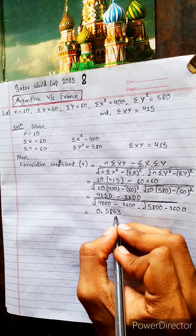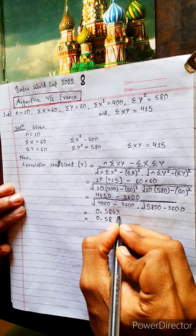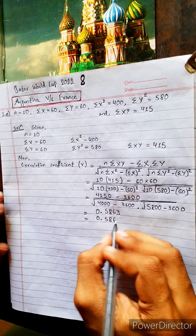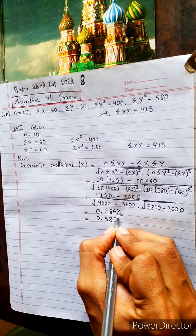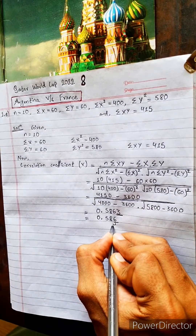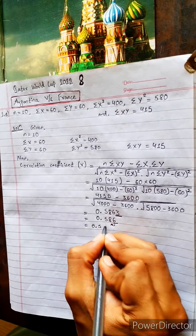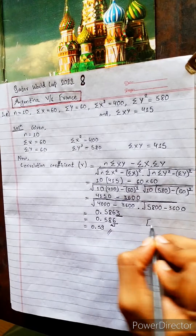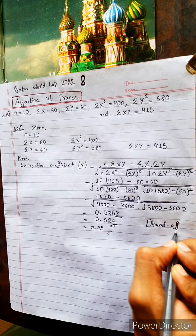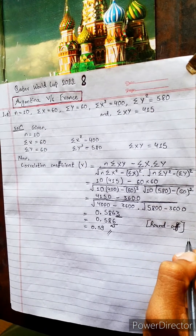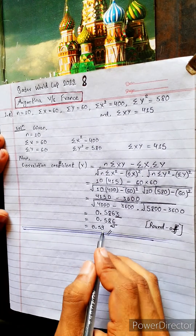Now we have to round off. The digit 3 is less than 5, so we write only 0.586. Then looking at the next digit — it is greater than 5, so 1 will be added, giving 0.59. This is a math round-off, not a group stage round-off.